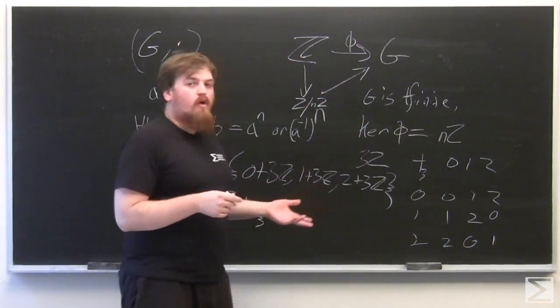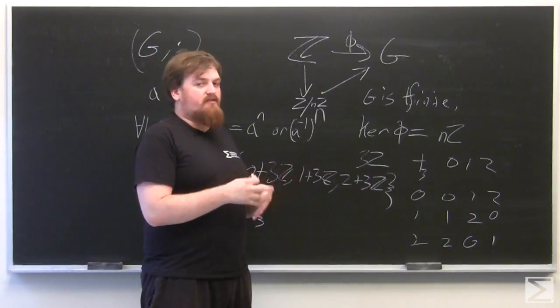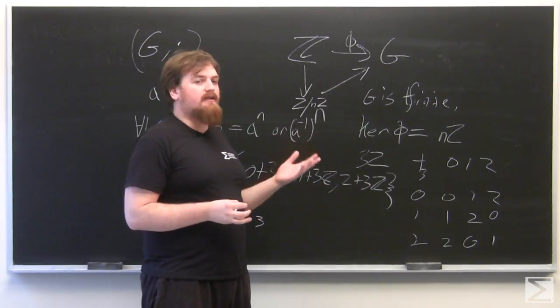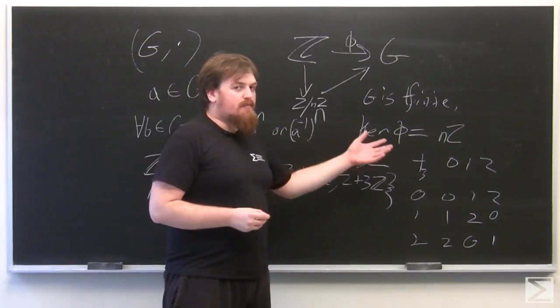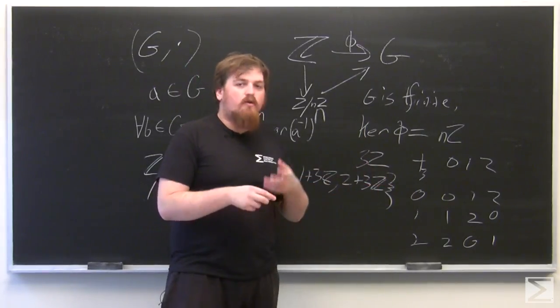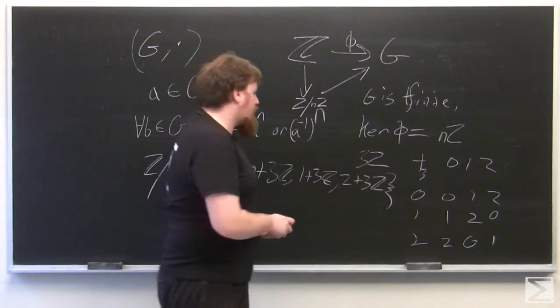Of course, even though all cyclic groups have to be isomorphic to something that looks like Z mod nZ, say Z mod 3Z, they don't have to look like that on the surface.